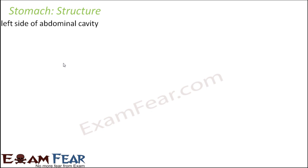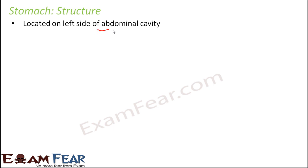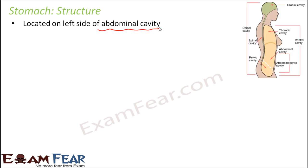The stomach is located on the left side of the abdominal cavity. Our body is divided into various cavities — from the front side we have the ventral cavities, and on the back side we have the dorsal cavities. The term dorsal means the back portion.